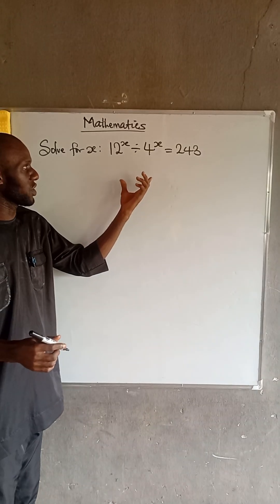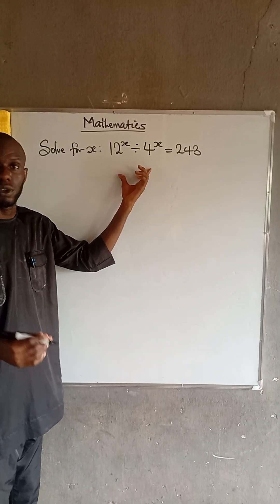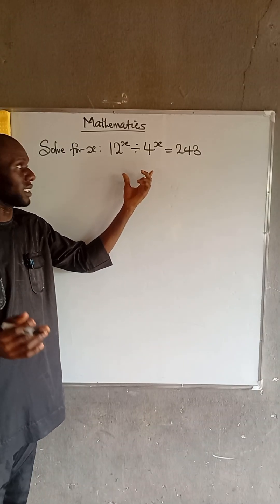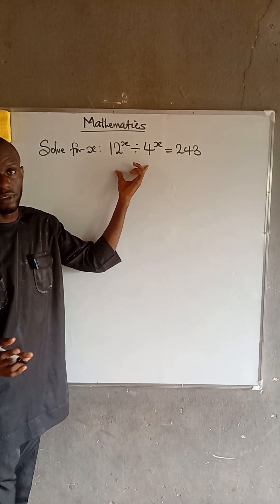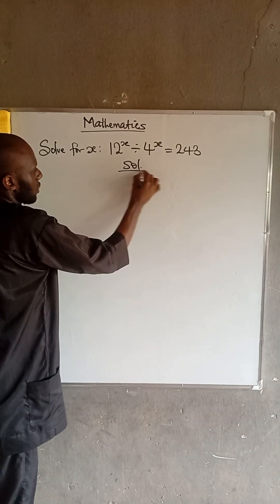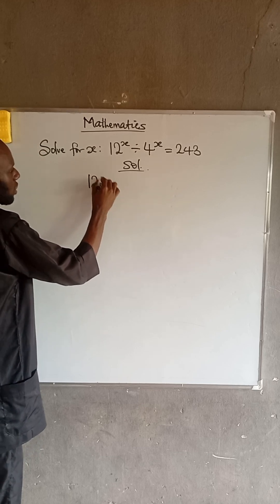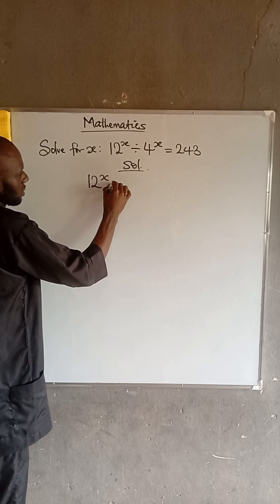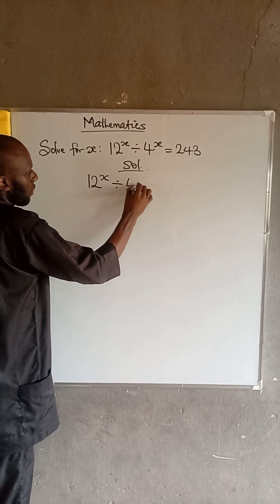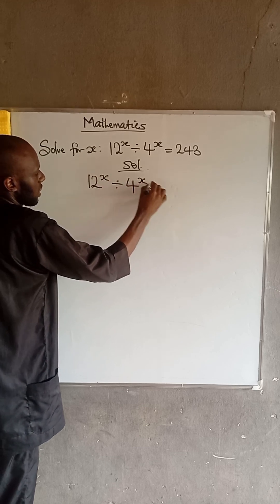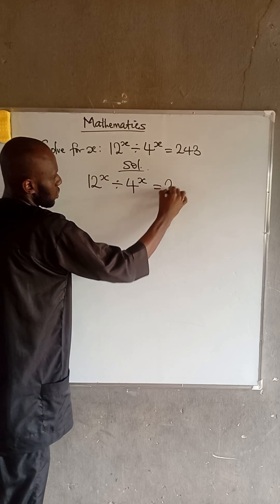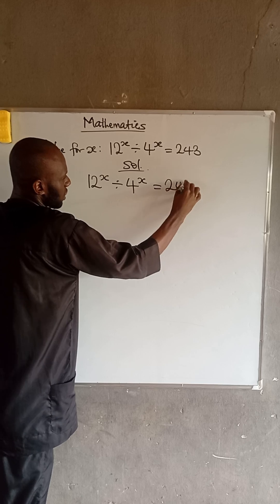We have an exponential equation, and we are asked to find the value of x. We have that 27 to the power of x divided by 4 to the power of x is equal to 243.